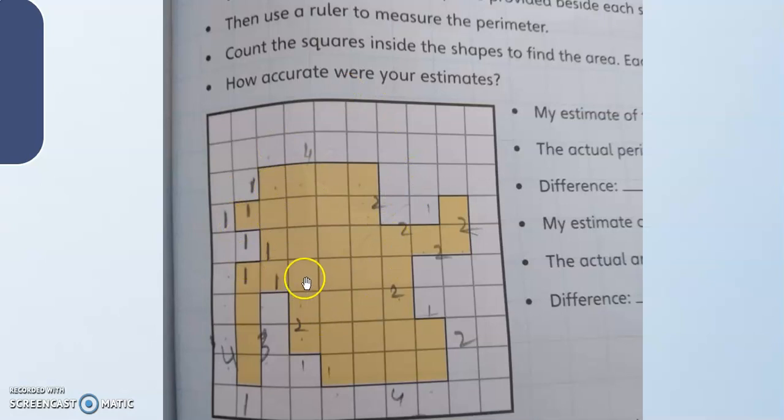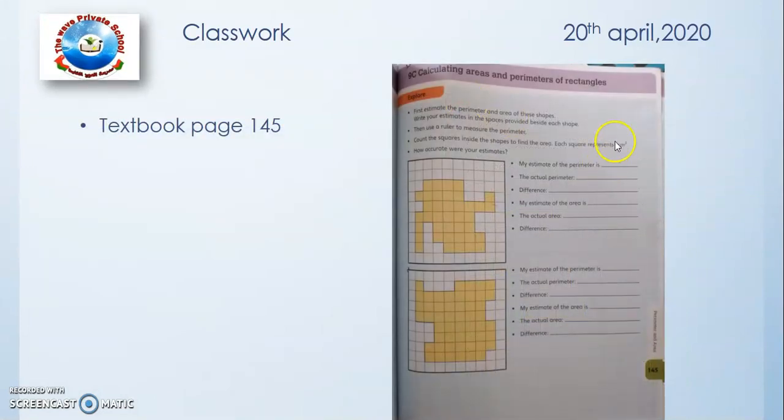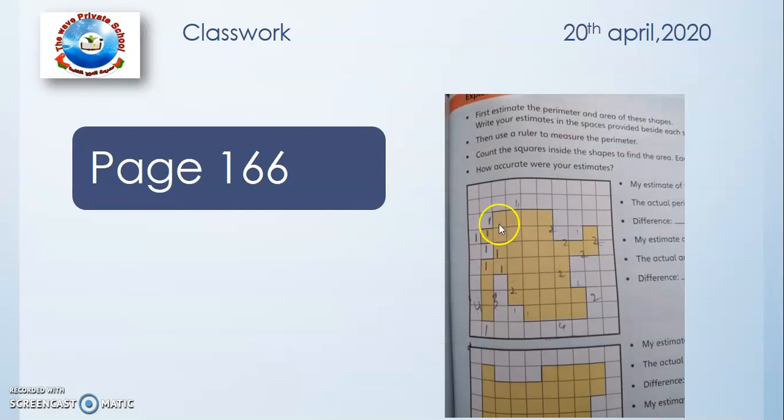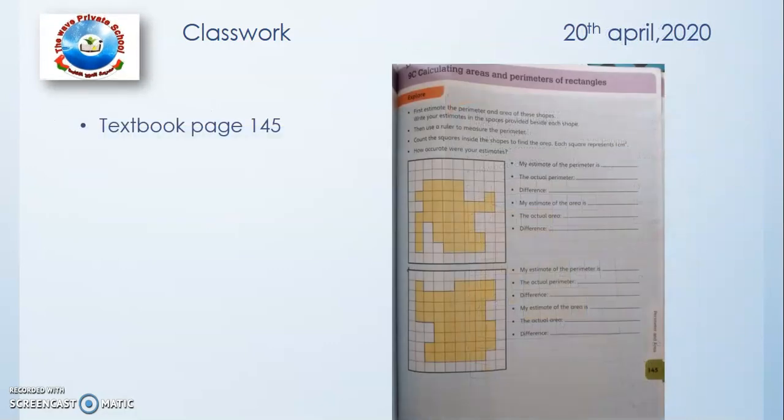But first of all, before counting the squares, we need to estimate what you think. How much perimeter for this shape can be. So you need to write your estimate. So I think it might be 40. My estimate of the perimeter is 40. After that, I need to count by using this square counting method. After adding all this 4 plus 1, 5, 6, 7, 8, 9, 10 and all these numbers, I get 41. So I need to write here 40 is the estimate that I estimated and 41 is the actual reading. Now I need to find the difference. 41 minus 40 is 1.